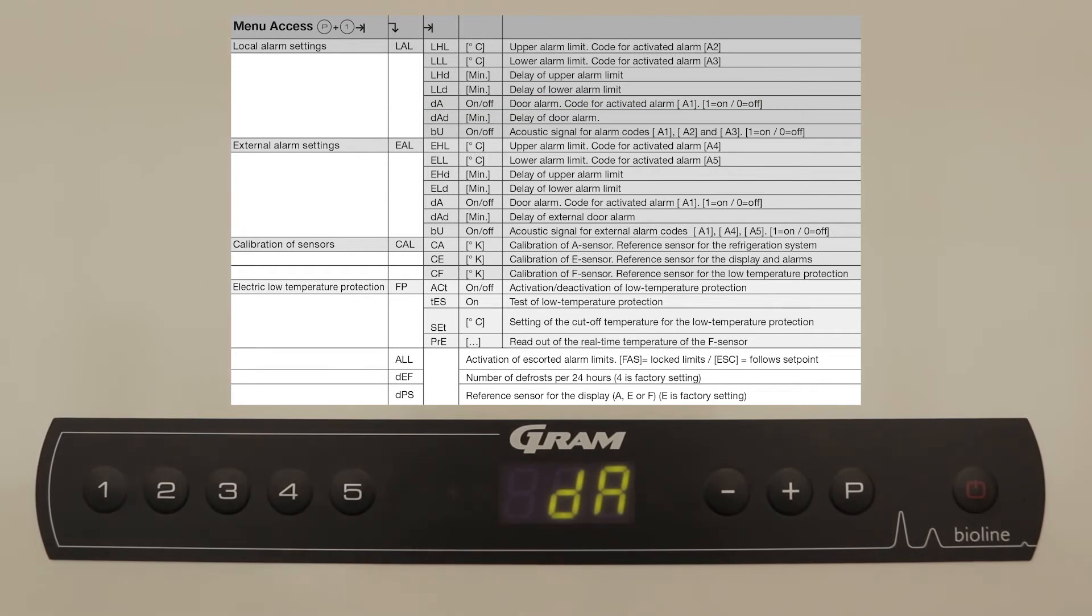We will now set the delay of the door alarm. This is in increments of 1 minute. We will set this to 1.